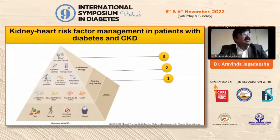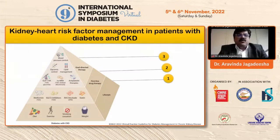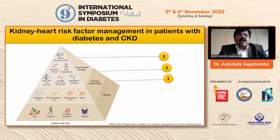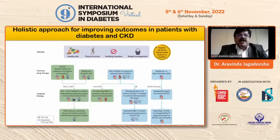This is an interesting slide showing kidney and heart risk factor management in patients with diabetes and CKD. In this pyramid from the bottom: the first priority is diet, exercise, weight management, and smoking cessation. The second level is first-line drug therapy — metformin, SGLT2 inhibitors, RAS blockade, and statin. At the top is goal-directed therapy: GLP-1 RA, TZDs, NSMRAs, anti-platelet therapy, lipid management, glycemic control, and blood pressure control.